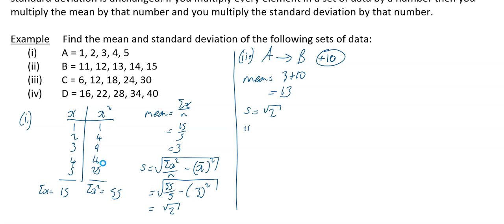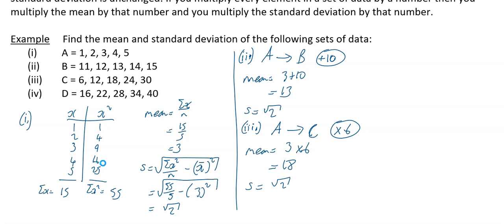For part 3, we think about how to get from A to C — and what you do is multiply by 6. That means the mean is the original mean of 3 times 6, giving 18. And the new standard deviation is root 2 times 6, which is 6 root 2.